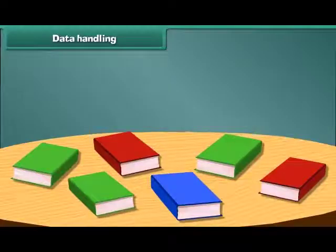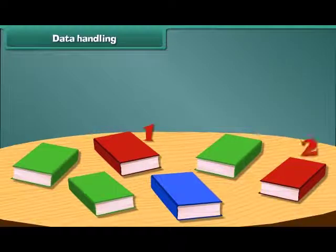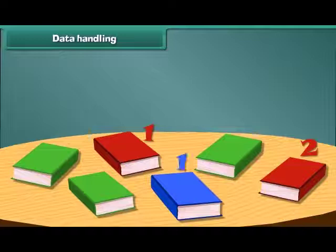Friends, now let's count and arrange these books in the bookshelf. How many red colored books are there? 1 and 2. There are 2 red books. And how many blue books are there? Let's count. 1. There is only 1 blue book.